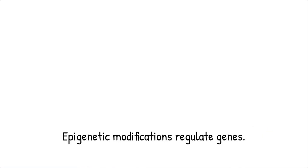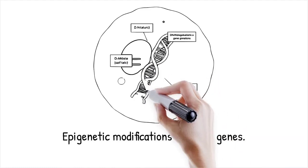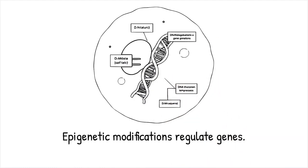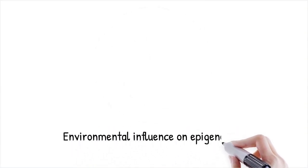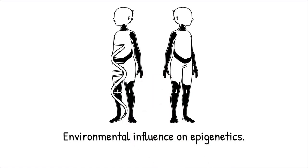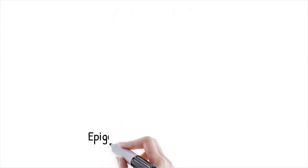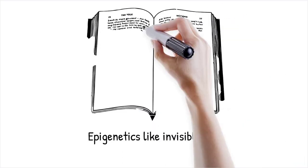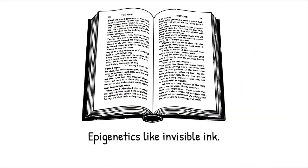Organisms also store regulatory information through epigenetic modifications such as DNA methylation and histone modifications. These chemical tags control gene expression without altering the underlying DNA sequence, enabling cells with identical genomes to differentiate into diverse tissue types. Epigenetic patterns can be influenced by environmental factors and inherited across generations. Identical twins have the same DNA but can exhibit differences in traits and disease susceptibility due to epigenetic variations shaped by their environments. It's like a book with invisible ink — while the printed text remains the same, different messages become visible under specific conditions.